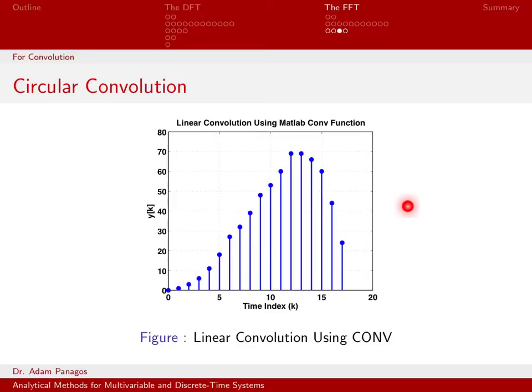However, if you're dealing with much longer signals, in general, this would not be a very good way to do it because convolution in time is a very slow operation. A better way to do it is to use the FFT to go into the frequency domain, do multiplication in the frequency domain, and then go back to the time domain using the inverse fast Fourier transform.